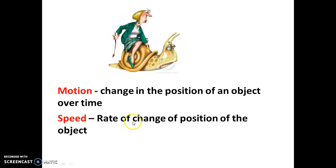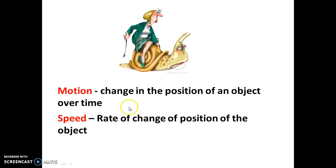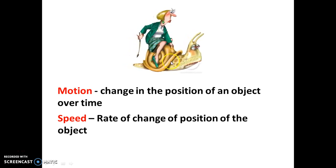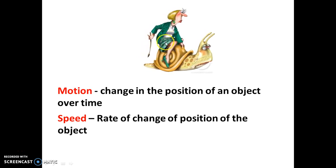The rate of change of position of the object with time is called as its speed. In the above animation, we can see that the speed of this snail is very slow and the woman sitting on it is quite annoyed because it's moving so slowly.